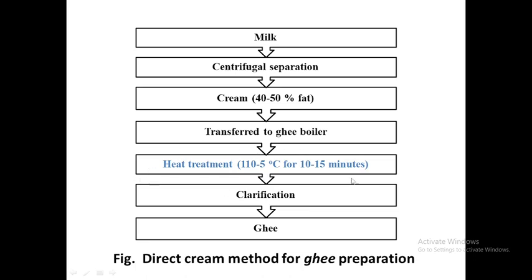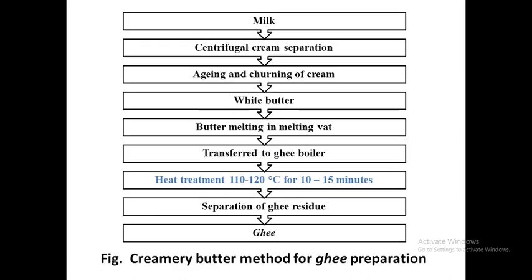In the ghee boiler, heat treatment is carried out at 110–115°C for 10–15 minutes. After this heat treatment, the contents are clarified. Cream contains three components: fat, SNF (solids not fat), and moisture. During heat treatment, moisture is evaporated and ghee flavor is developed. After heat treatment we have ghee and ghee residue, which is essentially the SNF part. Clarification removes this ghee residue from the fat, yielding the final ghee.